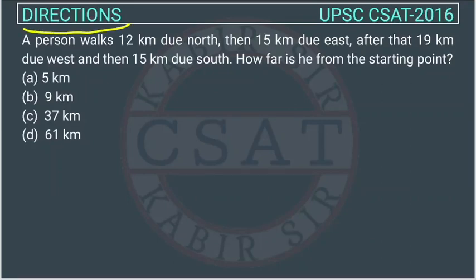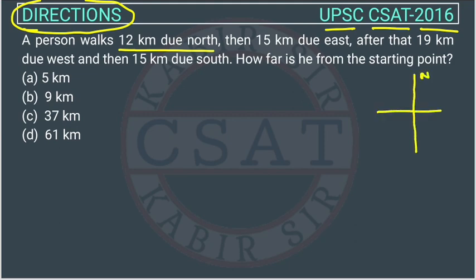This is a question of reasoning from the direction chapter, asked by UPSC in their CSET paper of 2016. A person walks 12 kilometers due north. We should draw a direction diagram — this is north, south, east, and west. Now it will be very easy to solve this question.